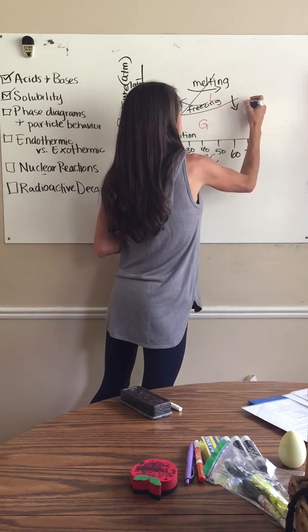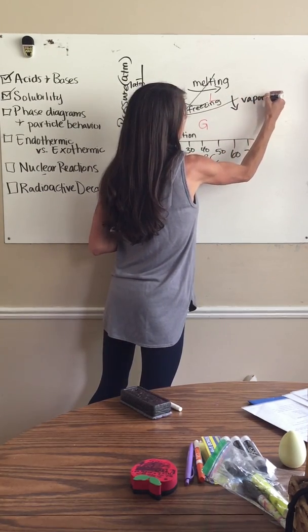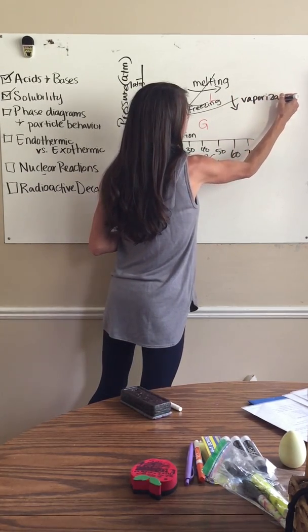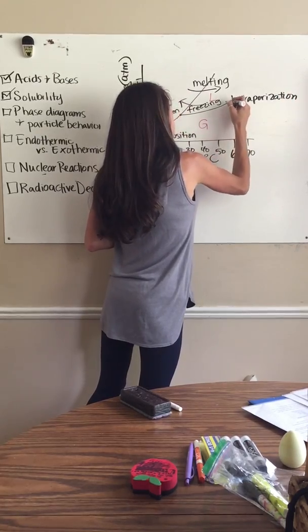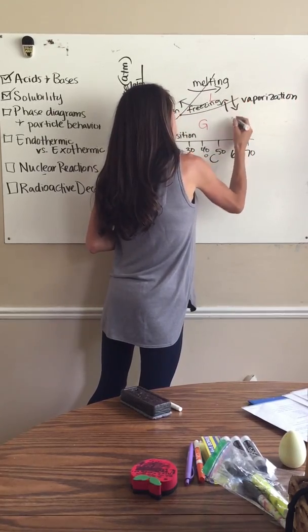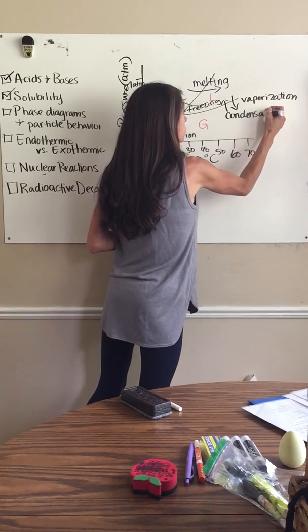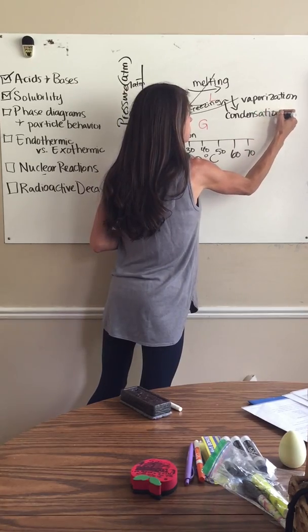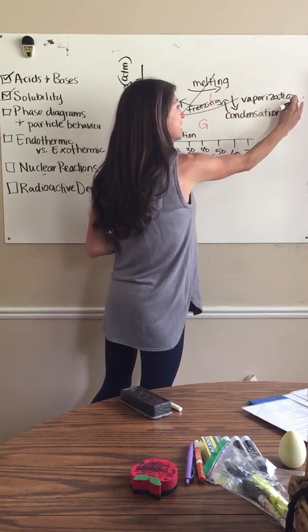Going from a liquid to a gas is vaporization, also known as evaporation. Going from a gas to a liquid is condensation — the particles slow down, and that would be the exothermic process, while vaporization is the endothermic process.